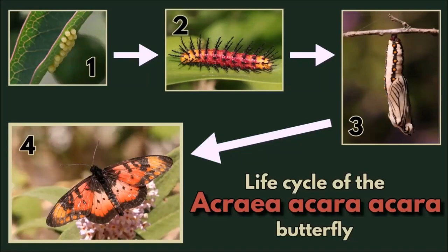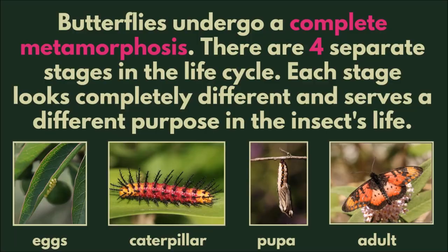Life cycle of the Acrea acara acara butterfly. Butterflies undergo a complete metamorphosis. There are four separate stages in the life cycle. Each stage looks completely different and serves a different purpose in the insect's life.